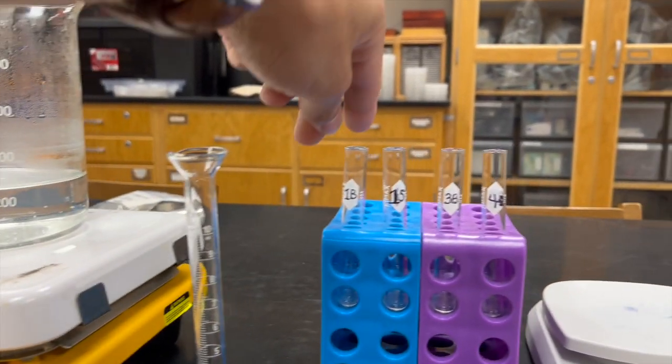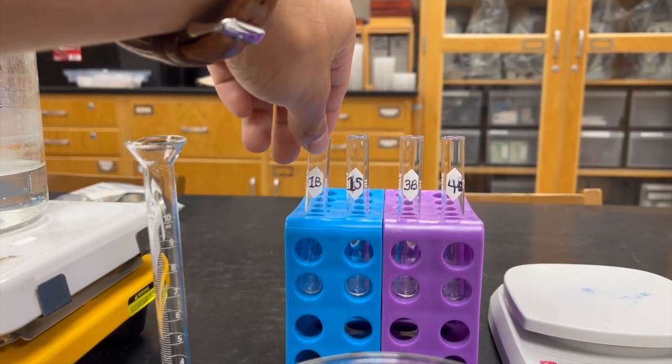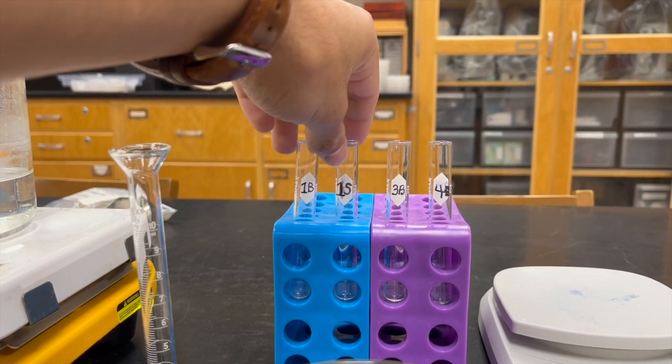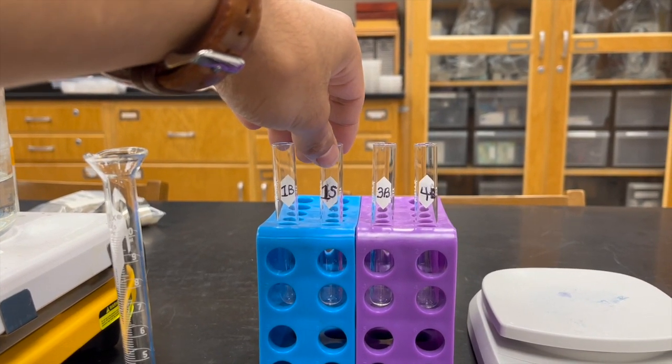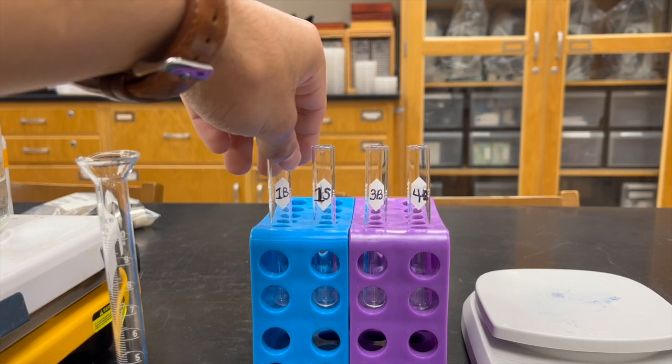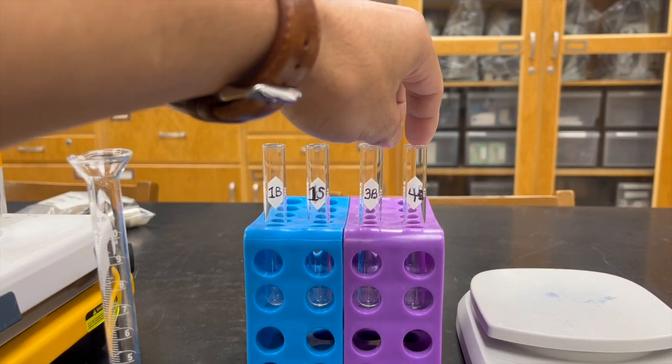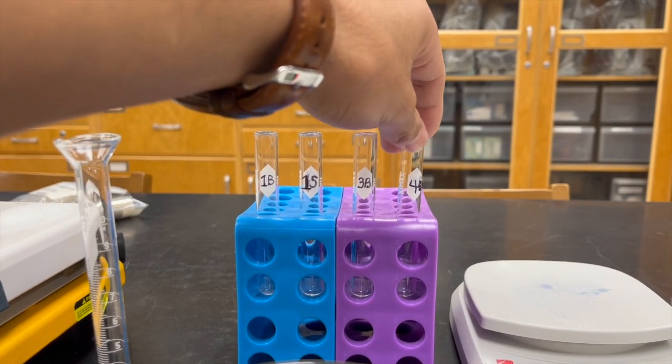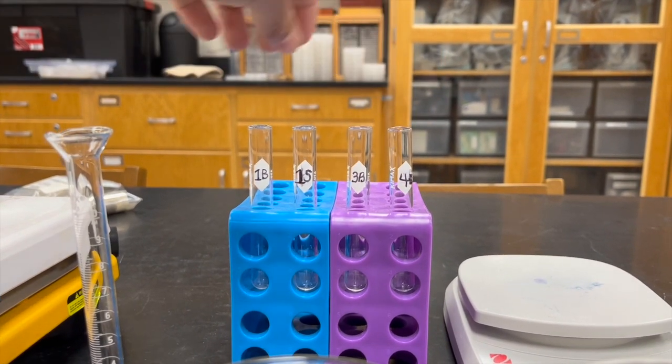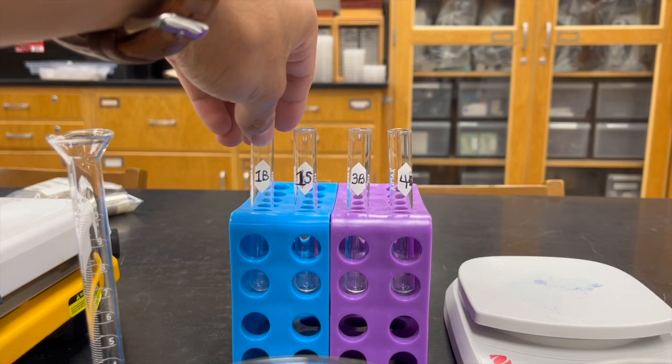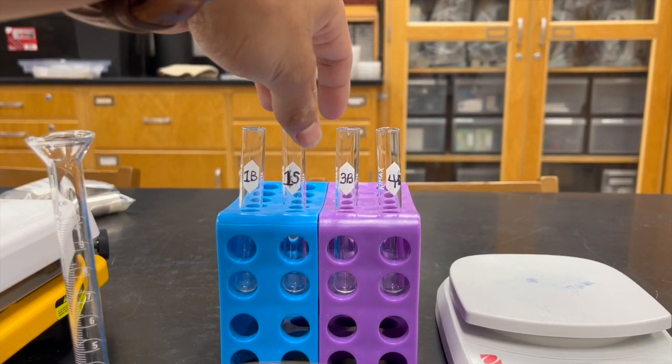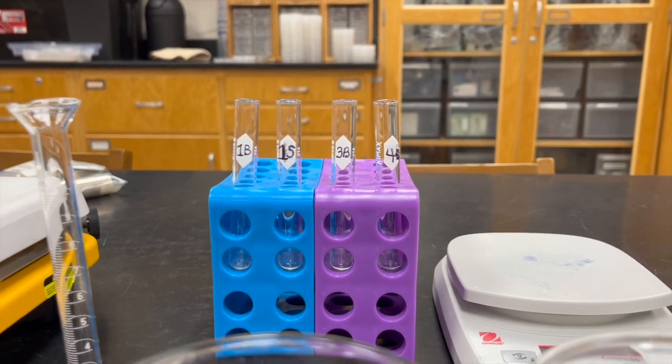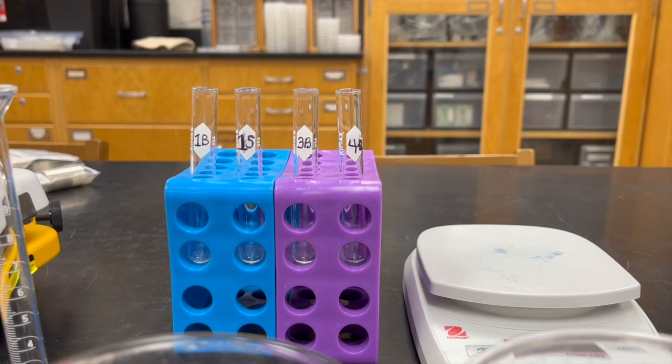The first two, 1B and 1S, are going to be in there for about two to three minutes, and this one takes a little bit longer, roughly five minutes or so. The instructions are in the lab manual, but you'll boil them, take them out, and get your test results. Then you'll write your test results down.